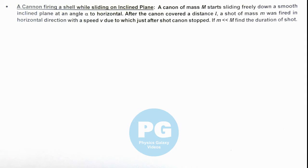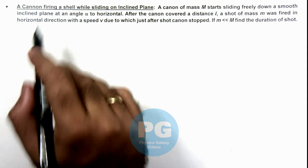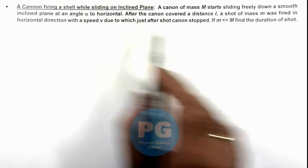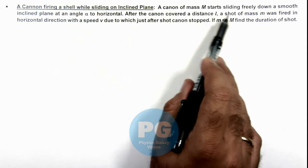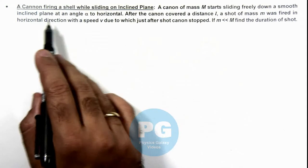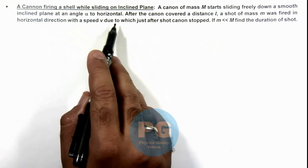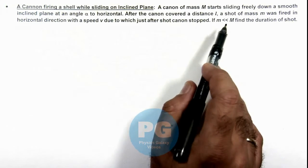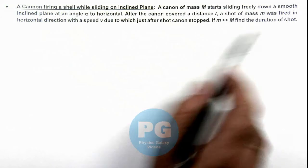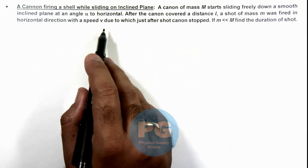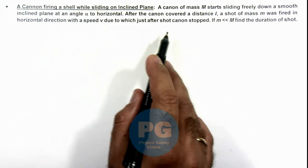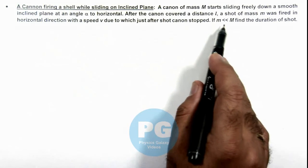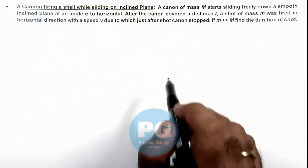In this illustration we'll discuss a cannon firing a shell while sliding on an inclined plane. A cannon of mass M starts sliding freely down a smooth inclined plane at an angle alpha to horizontal. After the cannon covered a distance l, a shot of mass m was fired in the horizontal direction with speed v, due to which just after the shot the cannon stopped. The mass of the shot is very small compared to M.